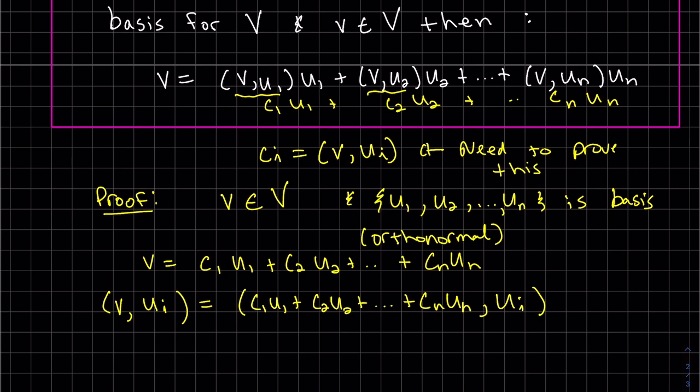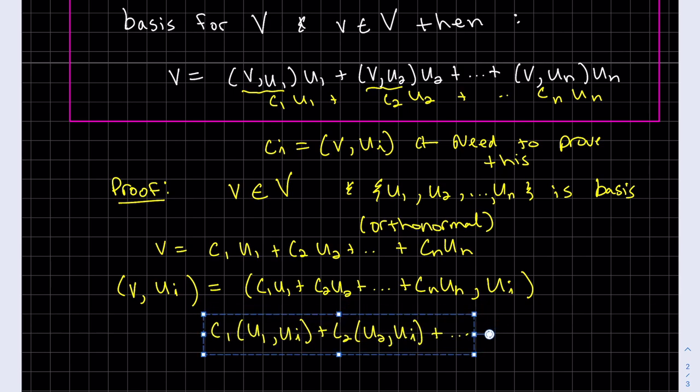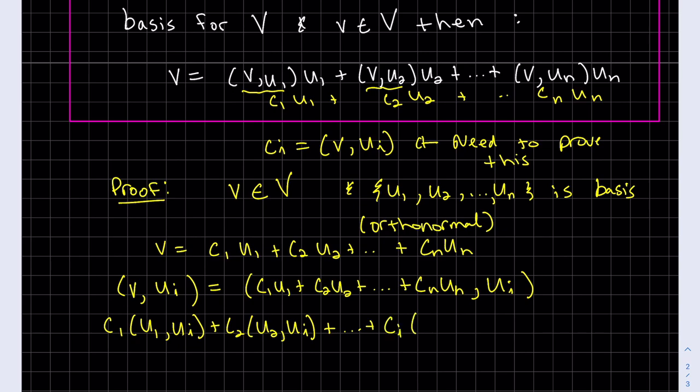So instead of v, it's (c1u1 + c2u2 + ... + cnun)·ui. Remember that property? We can write this as a whole bunch of inner products, separating them by the pluses. The pluses are on the outside, and those constants can come in front of each inner product too. So that would be c1(u1·ui) + c2(u2·ui) + ... + ci(ui·ui) + ... + cn(un·ui).